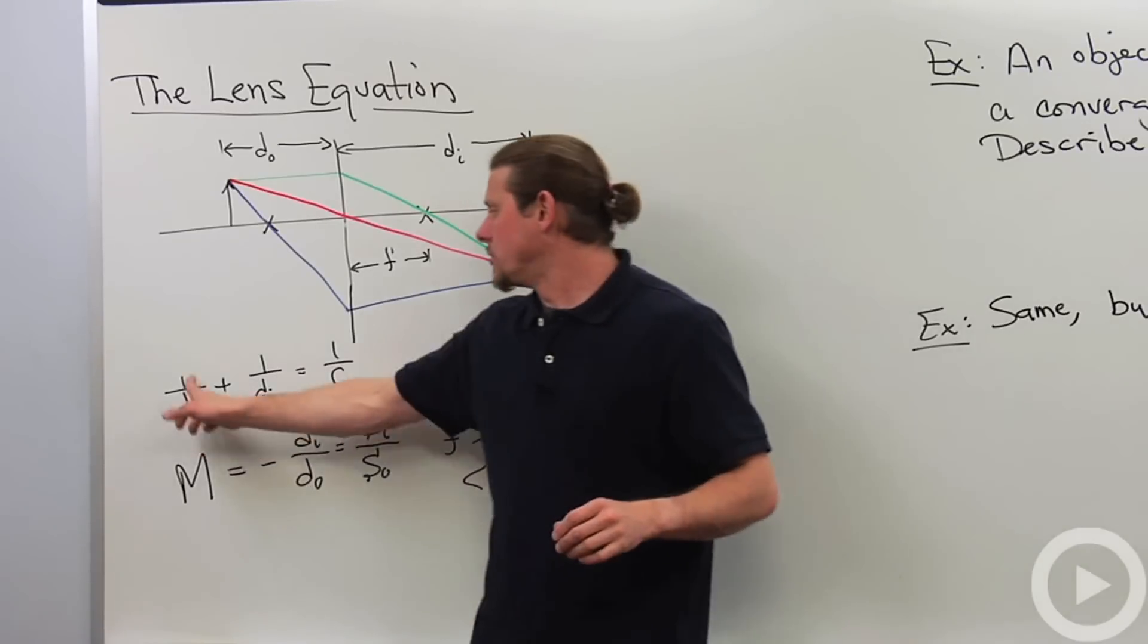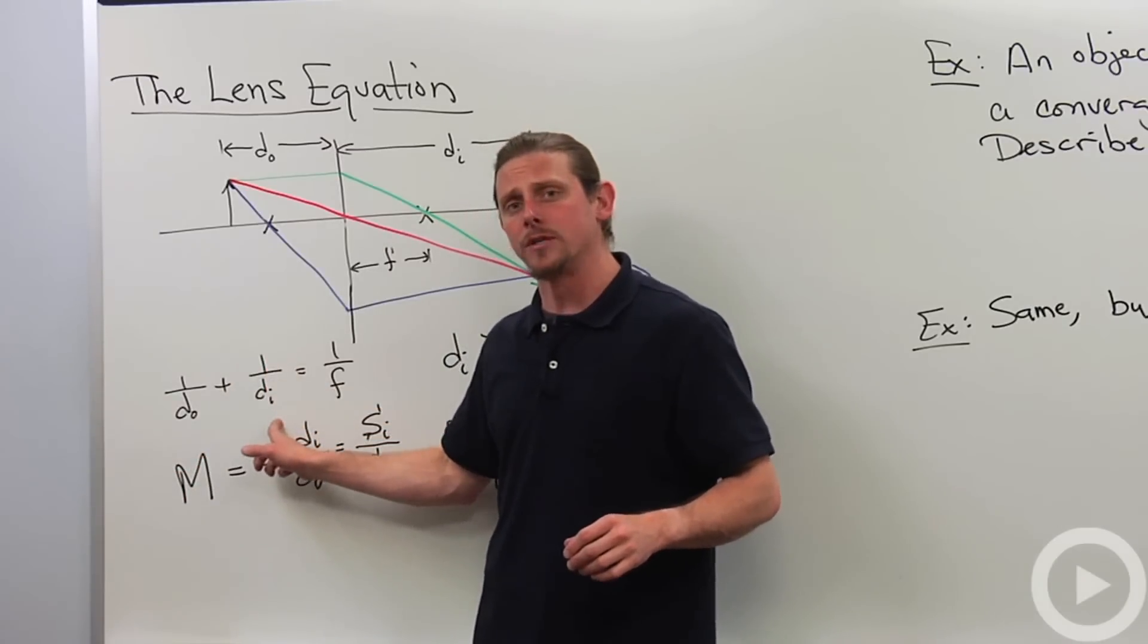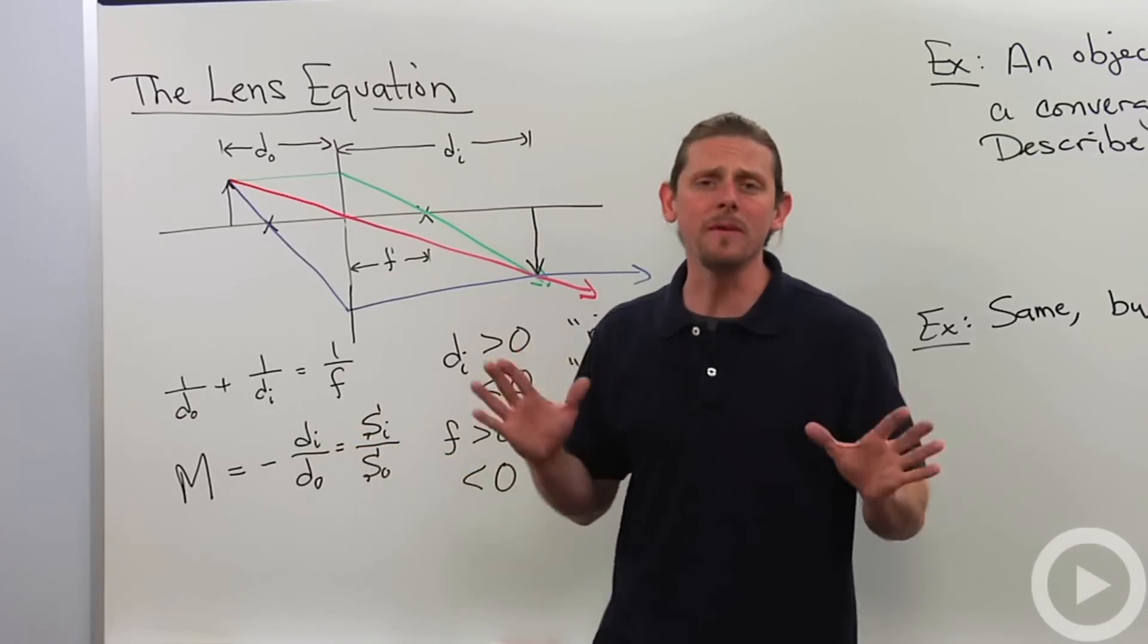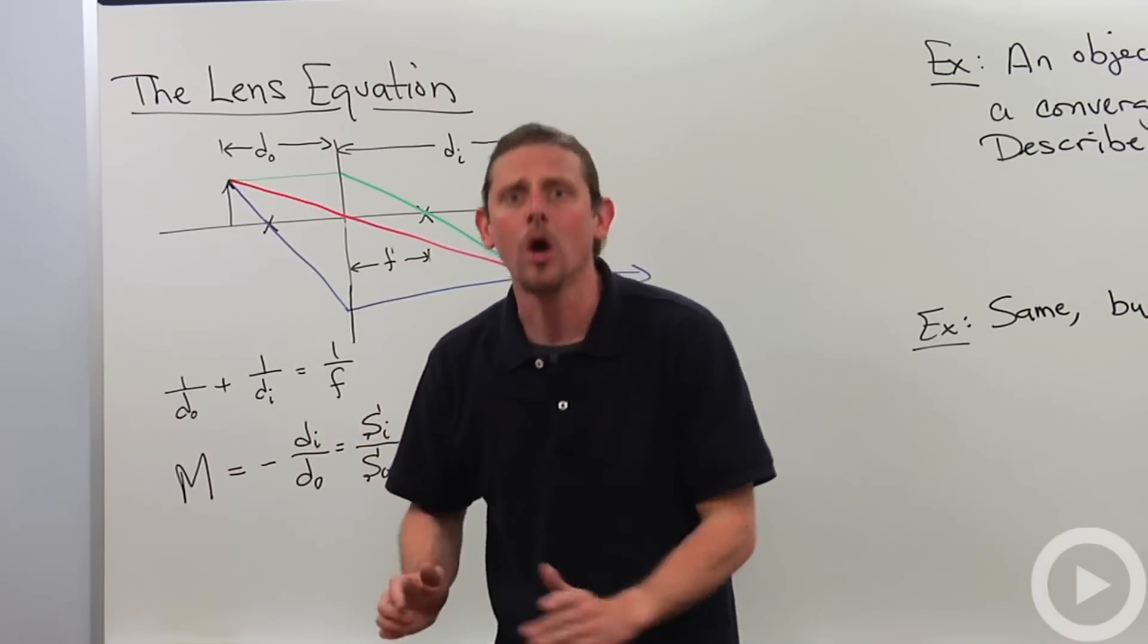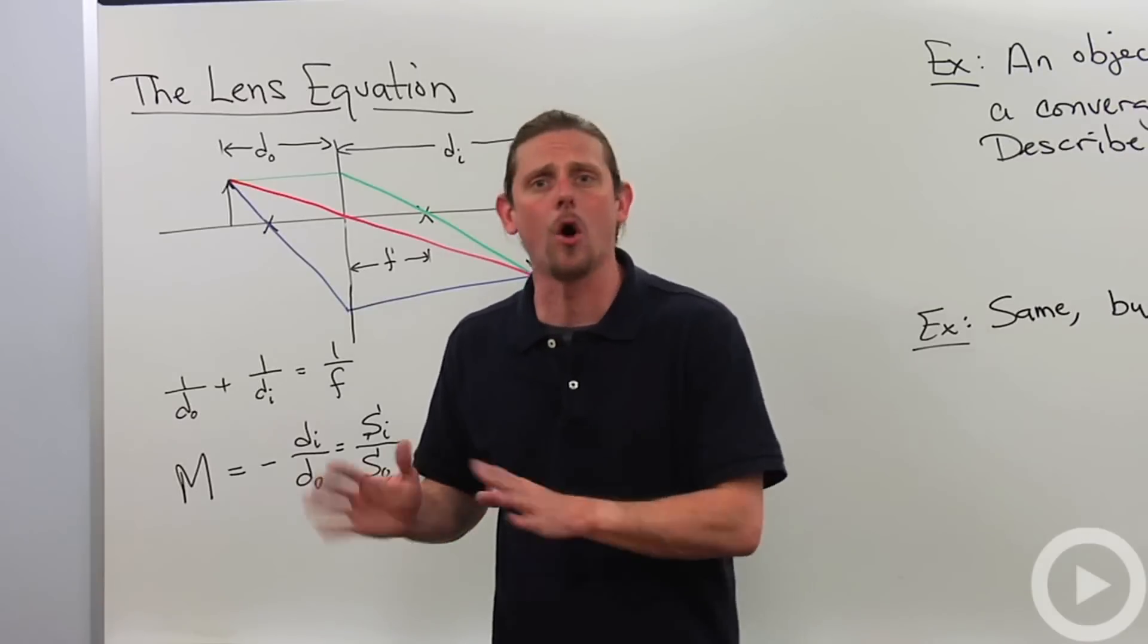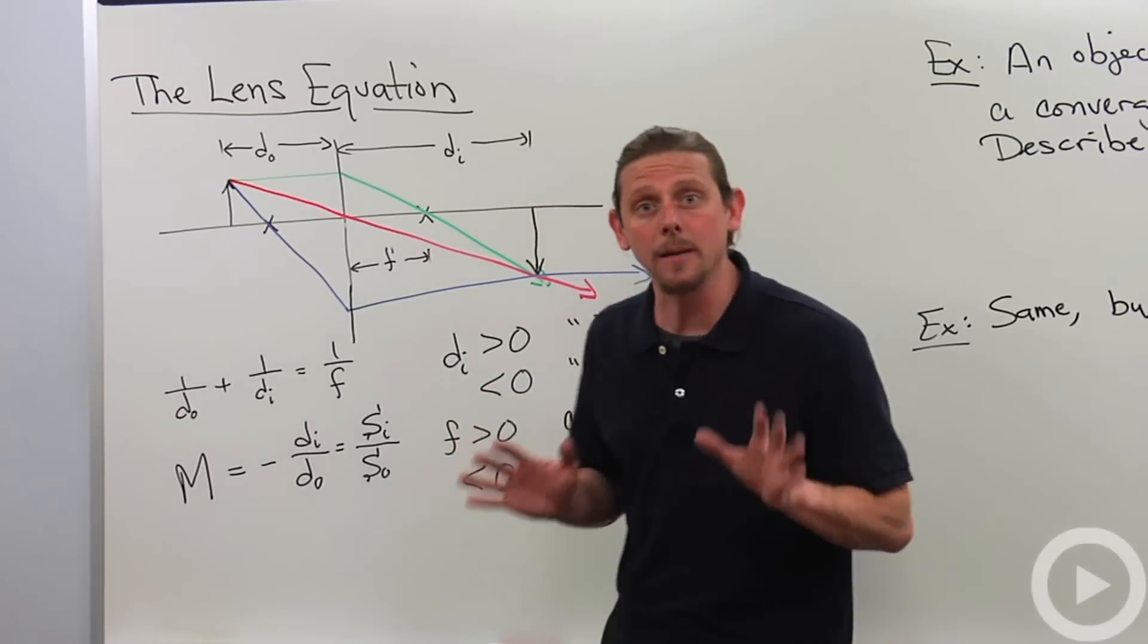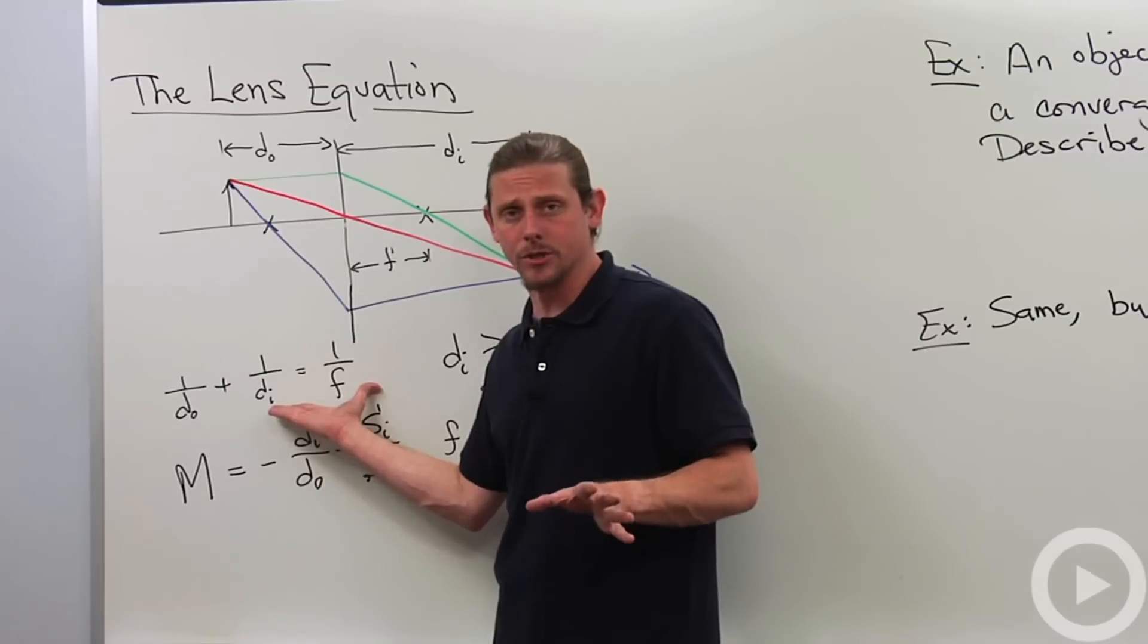Now, the lens equation says that if you do 1 over DO plus 1 over DI, you get 1 over F. You have to be very careful with this equation because it really means 1 over. You can't do DI plus DO equals F because it doesn't. That's never true. So you need to be careful with that. But once you are, it's not that difficult to use this equation.